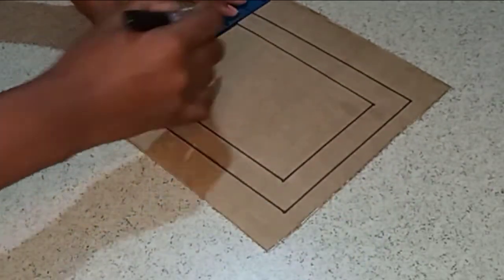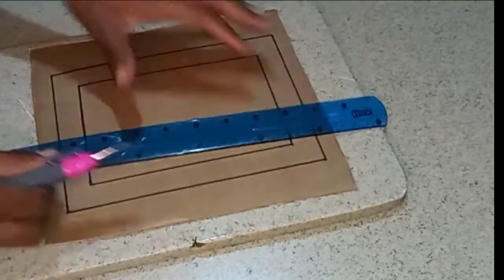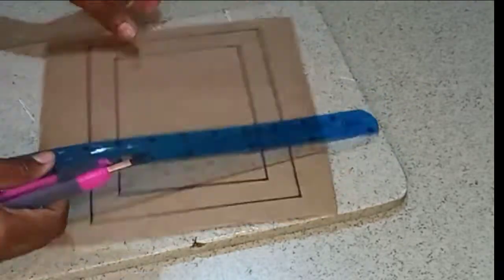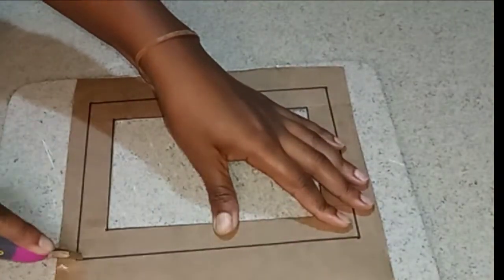After you have successfully drawn your frame go ahead with your cutter knife or your scissors and remove your cardboard. I started with the inner frame and cut that out and then I went ahead and cut out the outer frame.